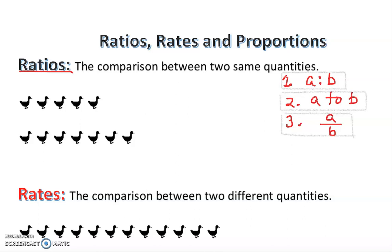And always at the end we should reduce the ratio if possible. Sometimes we see some qualitative data — in this case you can actually look into the duckies here. As you see, two groups of duckies are given. We're going to represent them as a ratio, so I want to make sure you stay with me and follow what I'm doing here.